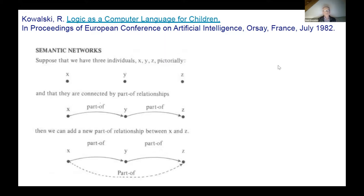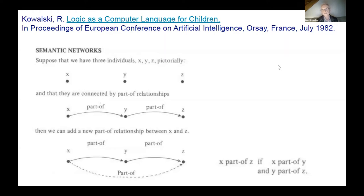The work on Logical English goes back to 1982 when I published a paper reporting work I had been doing with children — starting with my own children — teaching logic as a computer language in their local school. We started with semantic networks, which were a nice graphical representation of knowledge, and showed how semantic networks could be extended to include rules. For example, if you have two parts of some item, say a bicycle, and you have a transitivity relationship between x, y, and z, you can conclude that if x is part of y and y is part of z, then x itself is part of z. Logical English is a kind of further extension of that work.